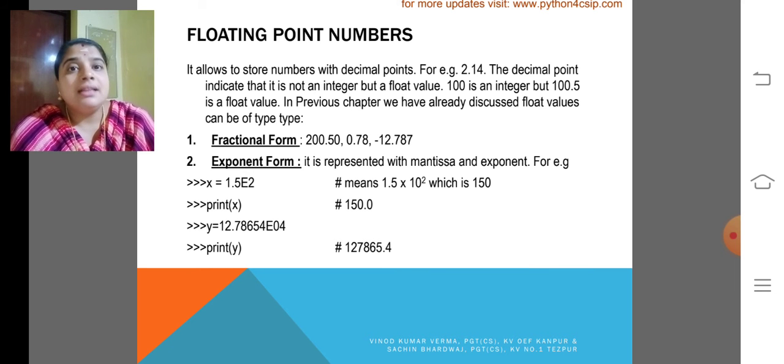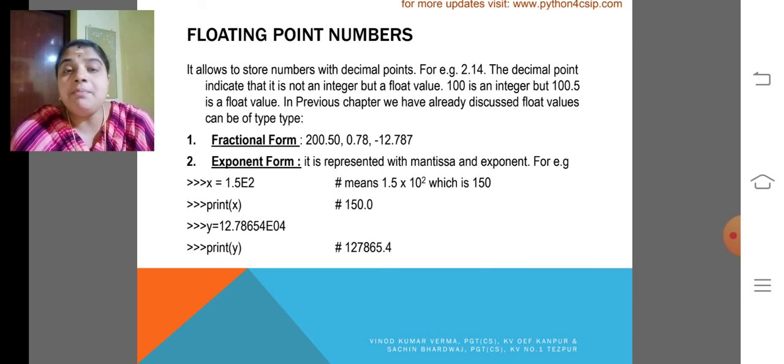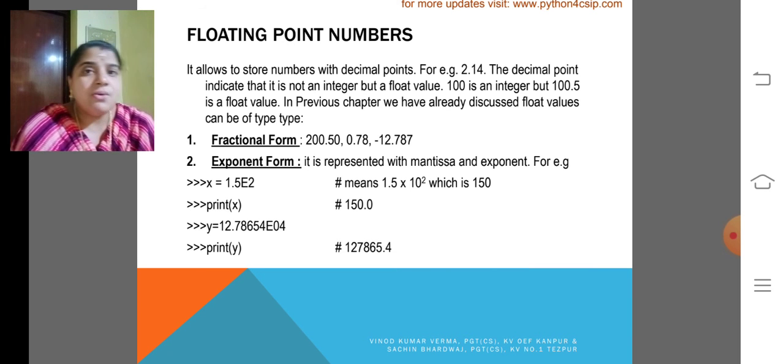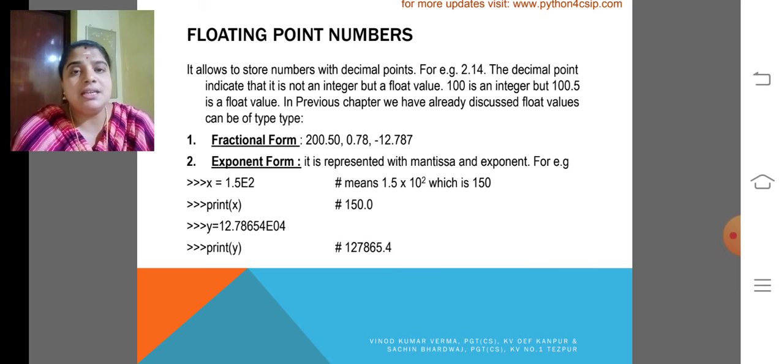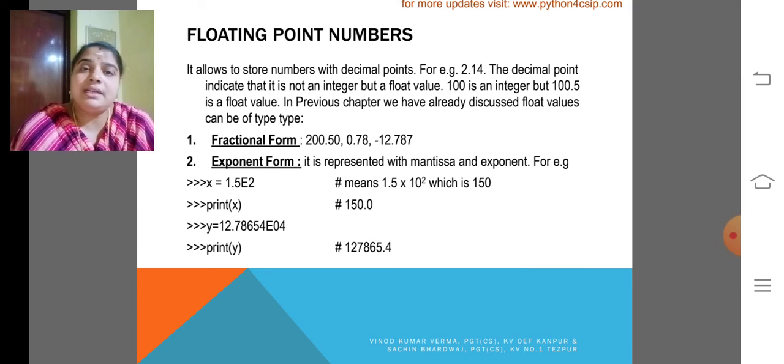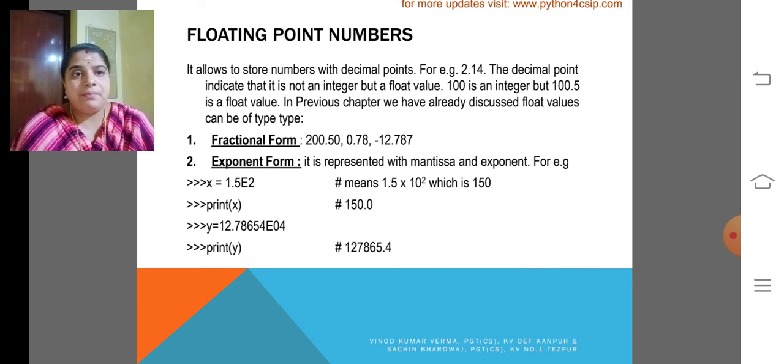But the exponent form is if you want to represent 10.5, I will represent 10.5 as 0.15 into 10 rise to 1 or 10 rise to 1, which is very equivalent to 1.5.